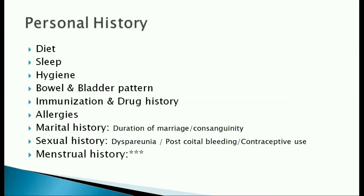Under personal history, we check if the patient is adequately nourished, if she is able to sleep well, or if there are any sleep disturbances. About personal hygiene and bowel and bladder pattern — constipation and increased frequency and urgency of micturition is common during pregnancy. Ask about her immunization status and exposure to any drugs or medicines, and any allergies should be noted. A detailed marital history including the duration of marriage and consanguinity — if it is a consanguineous marriage, mention the degree of consanguinity.